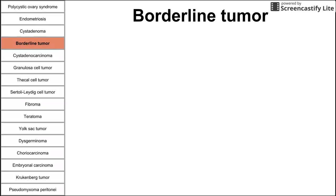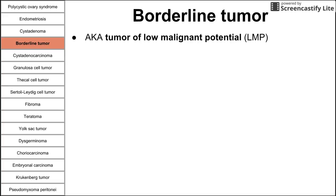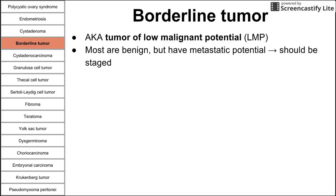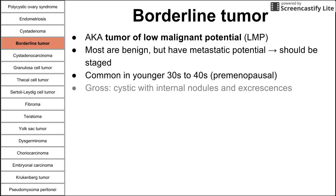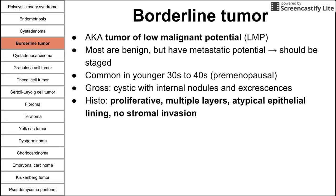Next is the borderline tumor, which is halfway between a cystadenoma and a cystadenocarcinoma — essentially a cystadenoma of low malignant potential. Most are benign, but they do have some malignant potential and should be staged. This is also common in younger, premenopausal patients. Grossly, you see a cystic mass with internal nodules and excrescences. On histology, you see proliferative multiple layers with atypical epithelial lining — worse than the single layer in cystadenoma — but there is not yet stromal invasion, so they are not cystadenocarcinomas, though they're not completely benign either.